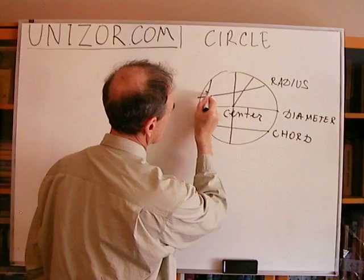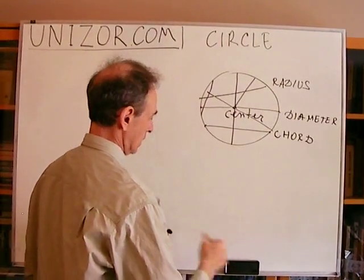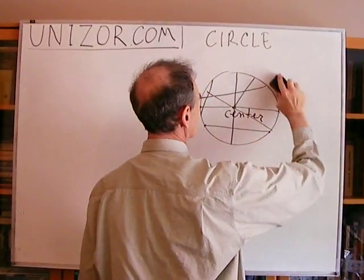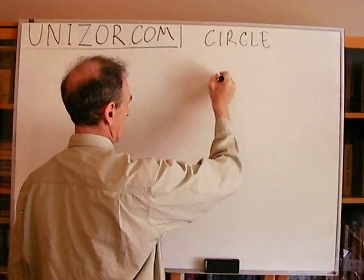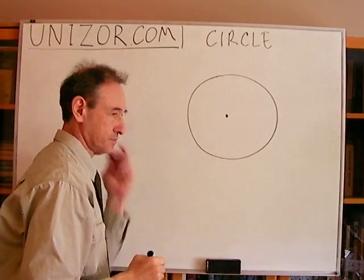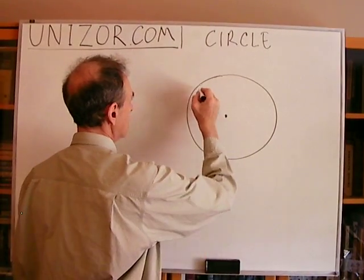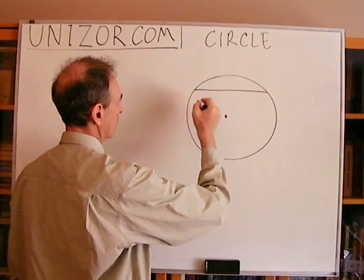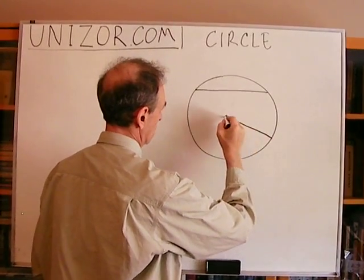So this is a diameter, and this is a diameter — they are all diameters. I put so many lines that we can't really see anything else, so let's do it again.